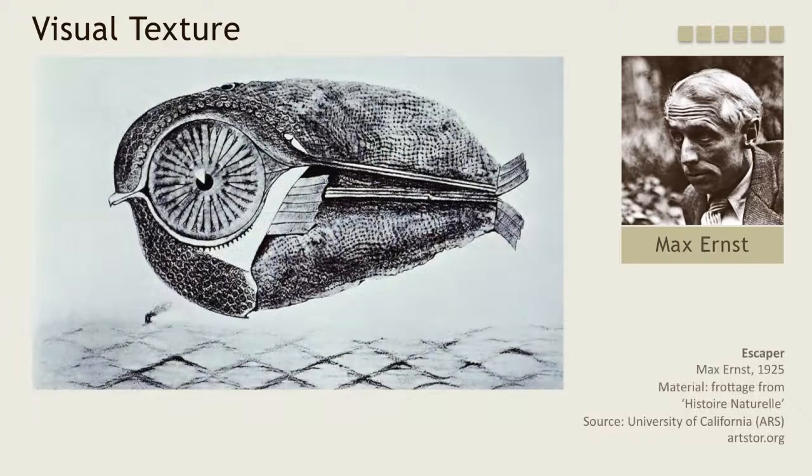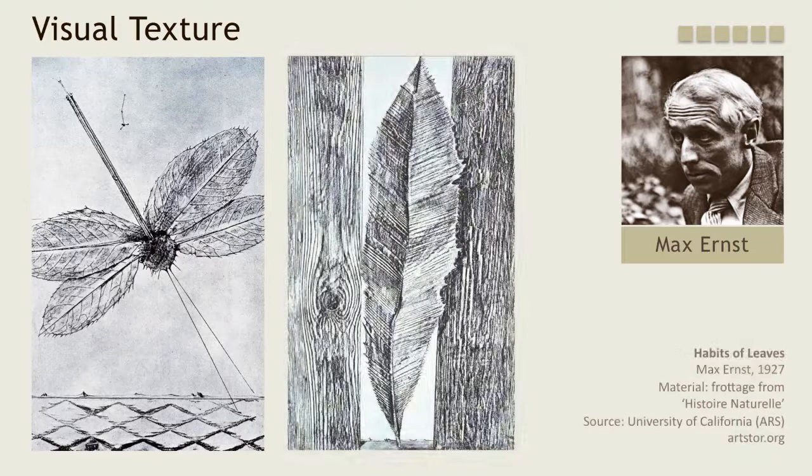What objects with actual texture might Max Ernst have used to create his visual patterns? What actual textures do you see immediately around you that you could use for the technique of frottage?